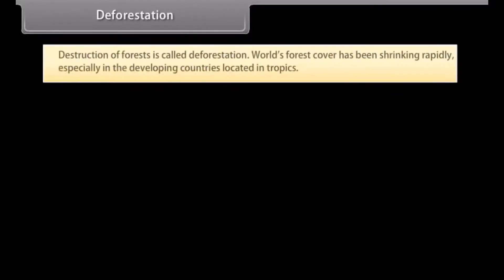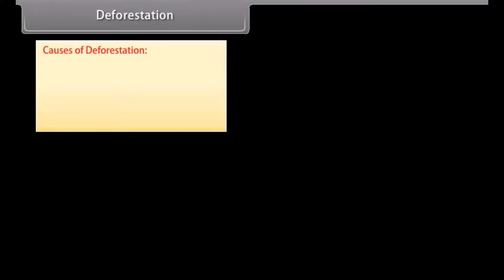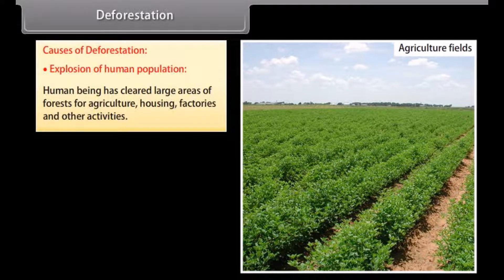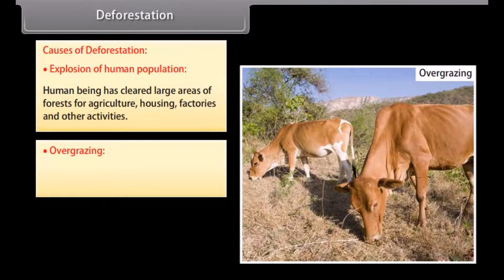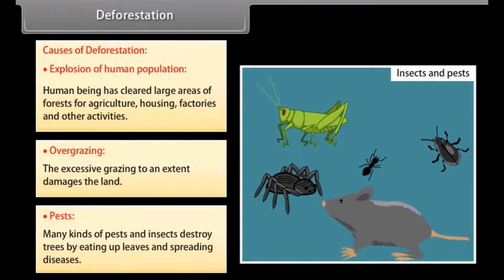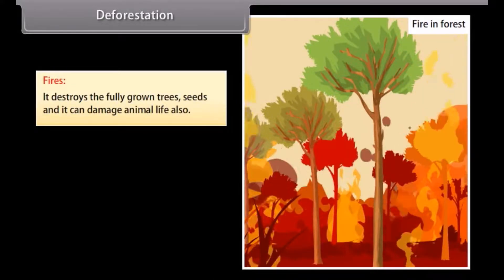Destruction of forests is called deforestation. The world's forest cover has been shrinking rapidly, especially in developing countries located in the tropics. Causes of deforestation include: explosion of human population, as human beings have cleared large areas of forests for agriculture, housing, factories and other activities; overgrazing, which damages land to an excessive extent; pests and insects that destroy trees by eating leaves and spreading diseases; and fires, which destroy fully grown trees, seeds, and animal life.